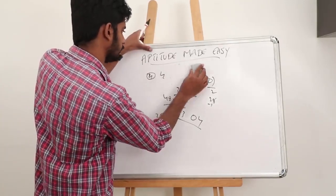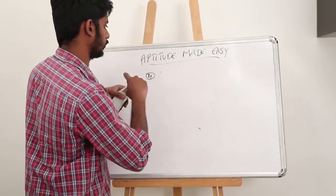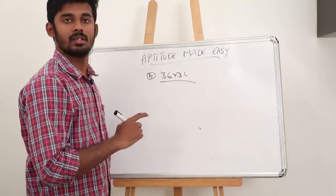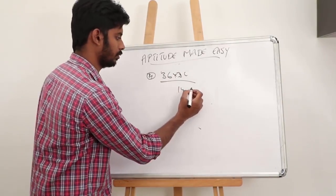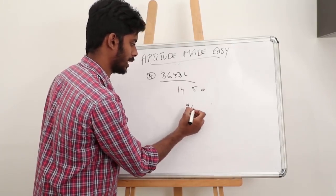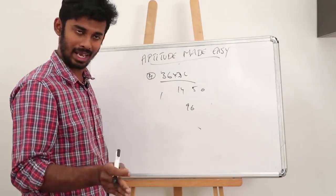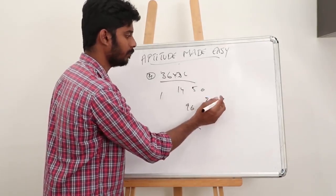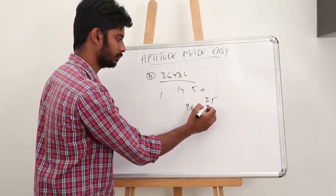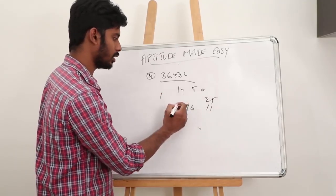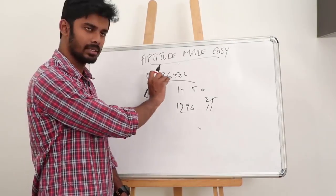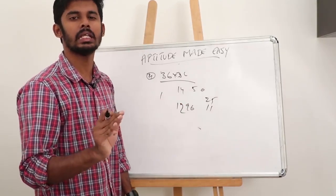Let's try 36 squared. 36 is 14 away from 50. 14 squared is 196 — keep 96 and carry the 1. Then 50 divided by 2 is 25, minus 14 is 11, plus the carry of 1 is 12. So 36 squared is 1296. If you practice this continuously a couple of times, you can solve numbers from 26 to 50 in just 2 to 3 seconds.